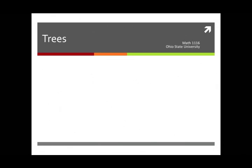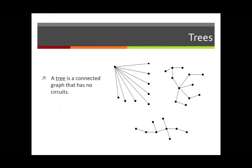This is a lecture about the graph theoretic concept of trees. Let's start with the definition. A tree is a connected graph that has no circuits. I'm showing you three examples over on the right. You can see in every case that these are graphs that don't have any circuits at all, and therefore they are trees.